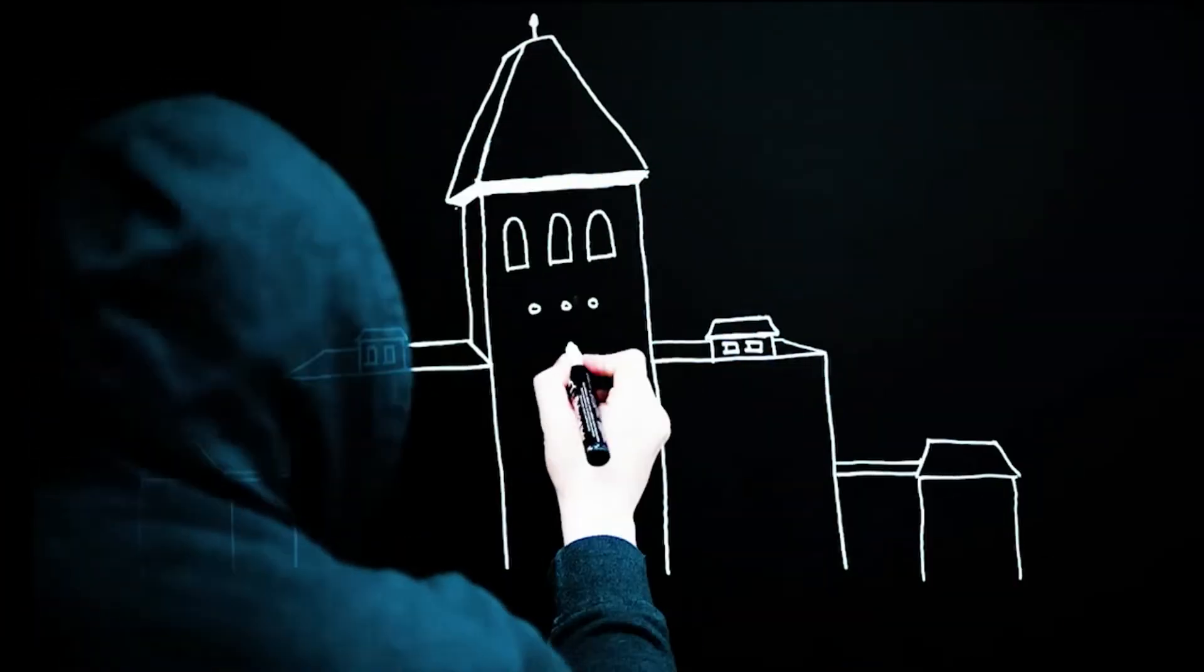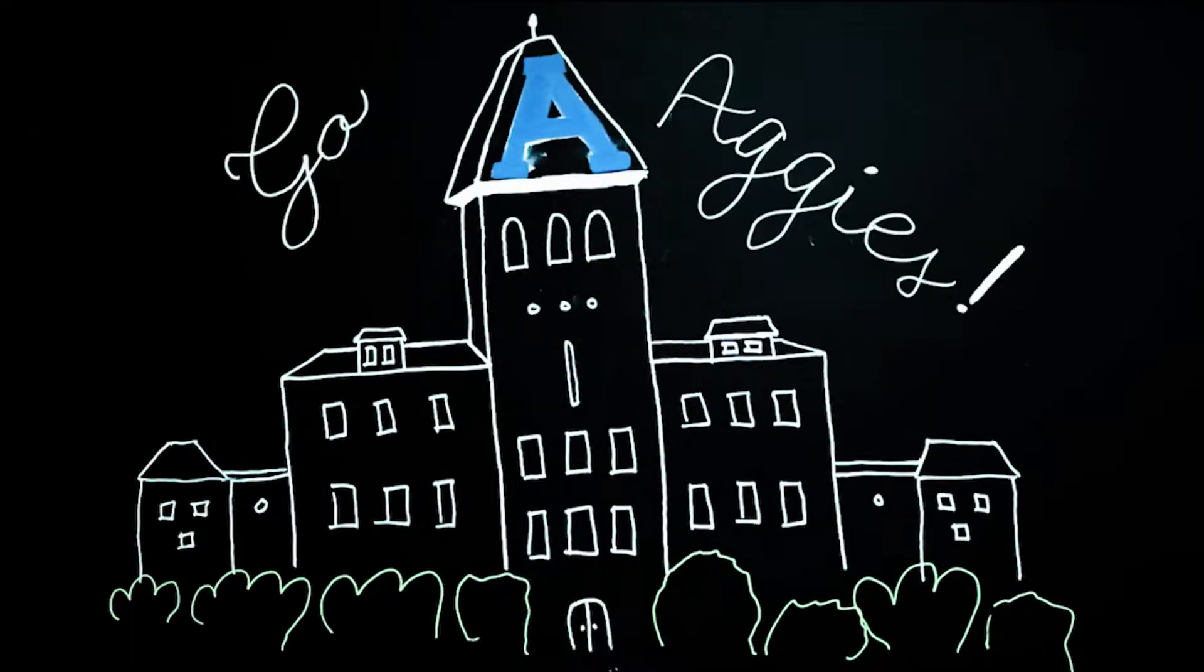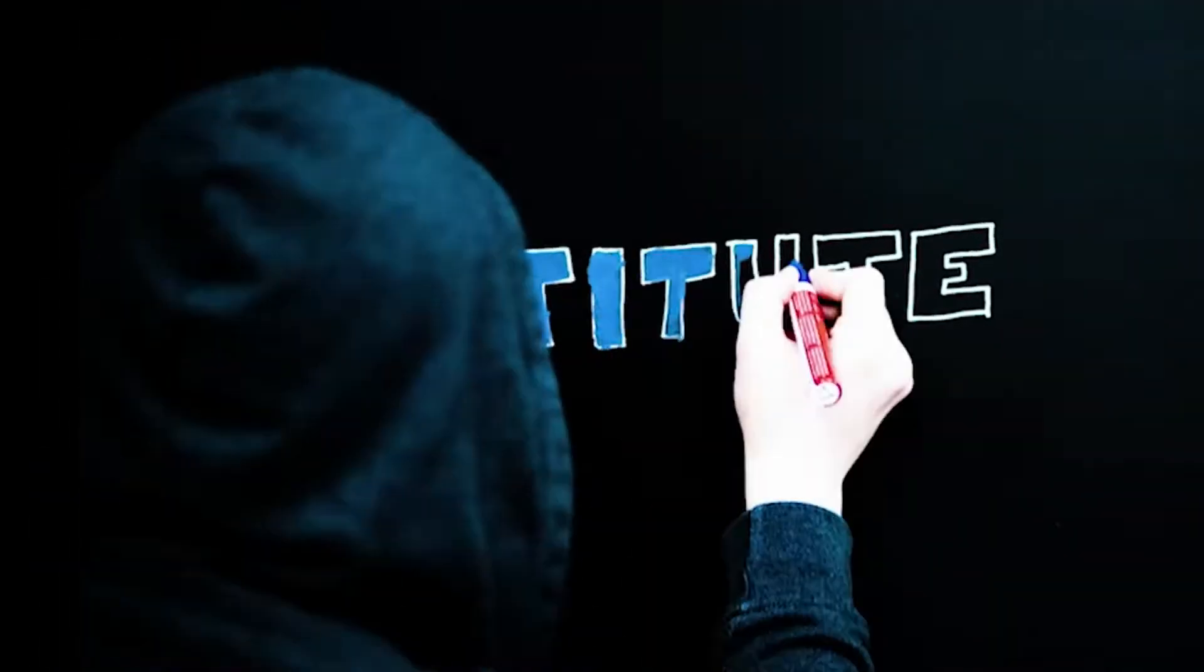If you've been to Utah State, you've probably noticed the Institute building. If you haven't, it's the one with giant letters on the side that spell Institute.